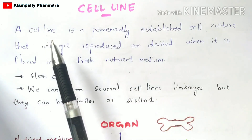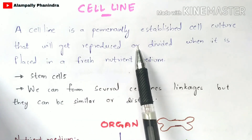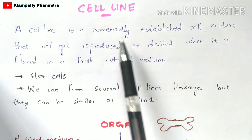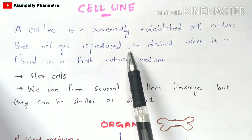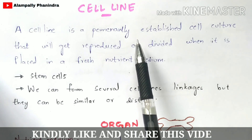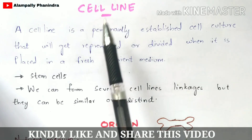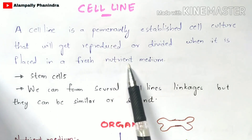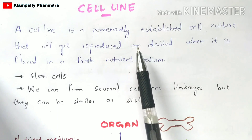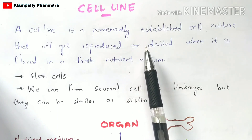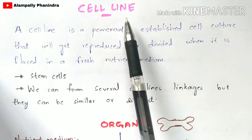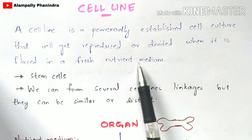A cell line is a permanently established cell culture that will get reproduced, divided, or proliferated when it is placed in a fresh nutrient medium. The nutrient medium plays a major and vital role, helping the cells to get reproduced or divided — one divides to two, two to four, four to eight — and that cell division process occurs by using this nutrient medium to form cell lines.